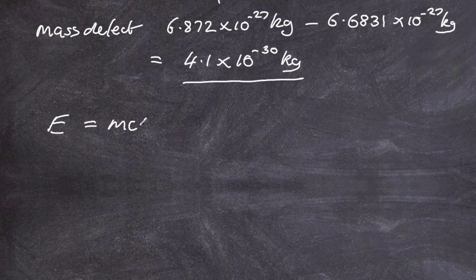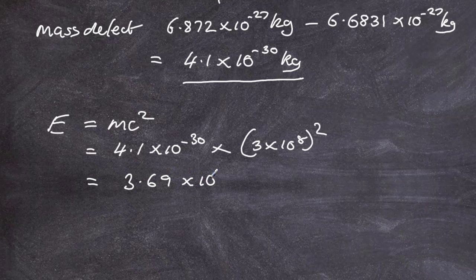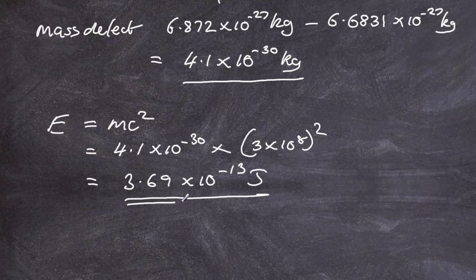Once we have the mass defect, we plug it into Einstein's famous equation E equals mc squared. The mass defect is 4.1 times 10 to the minus 30 kilograms, multiplied by the speed of light squared. Be careful with your calculation, and we end up with 3.69 times 10 to the minus 13 joules. That is the energy released in one of these reactions.